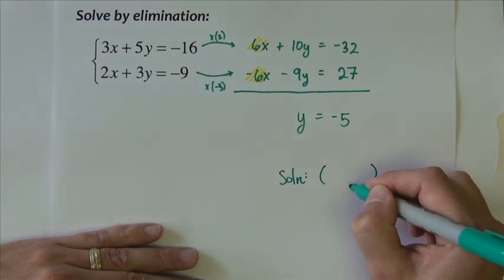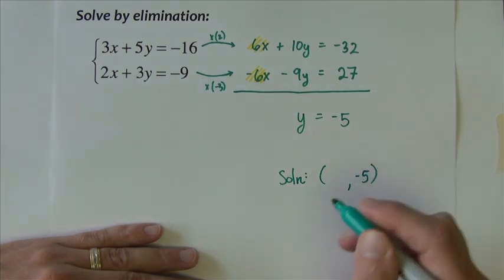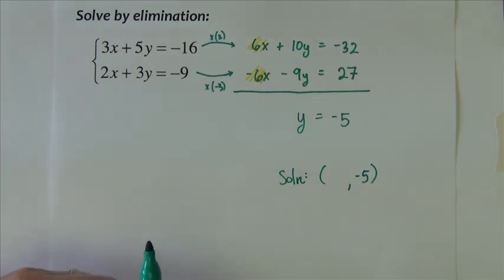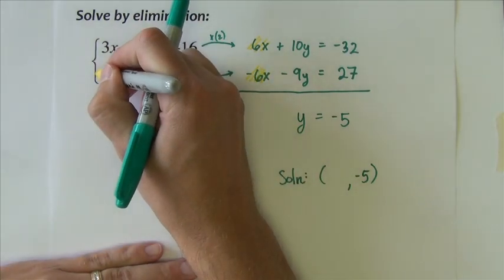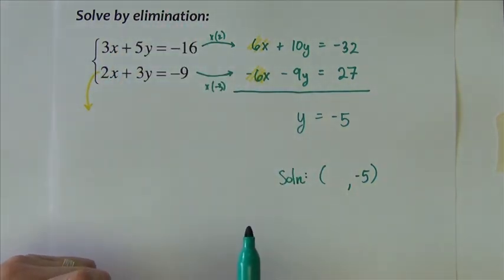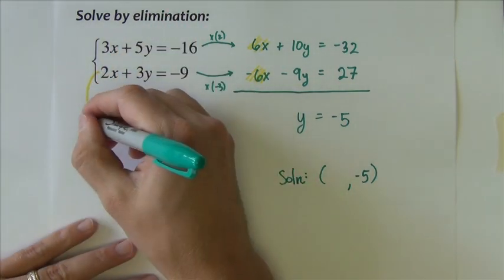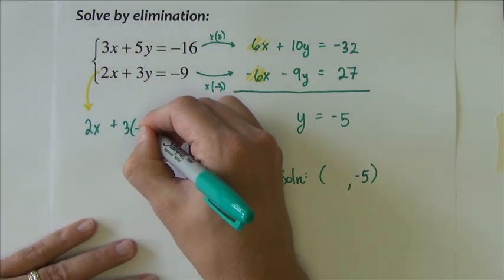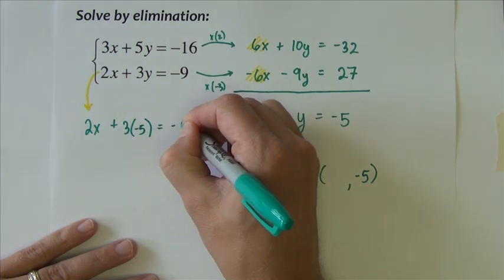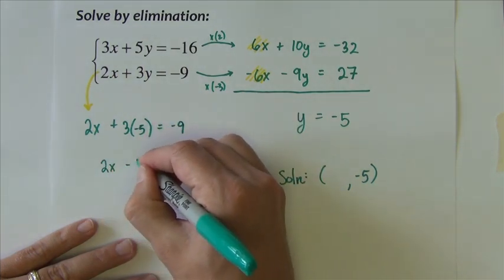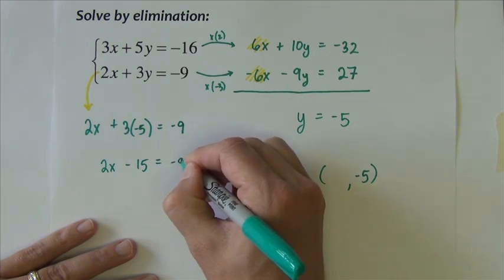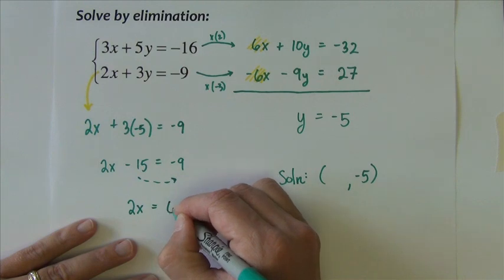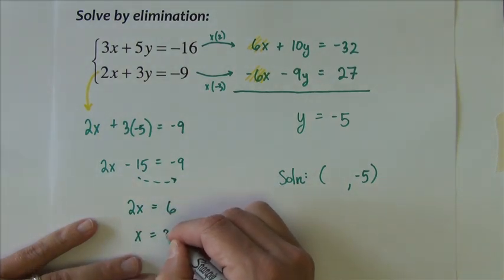So our solution, we have negative 5 for the y. What we need is the x that goes with it. So pick one of these equations. Let's just say we pick this one right here. So we have 2x plus 3 times negative 5 equals negative 9. That's 2x minus 15 equals negative 9. We're going to add the 15 over. So 2x equals 6 and x equals 3.